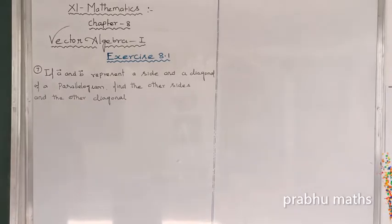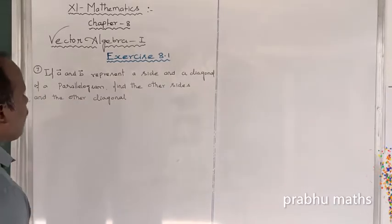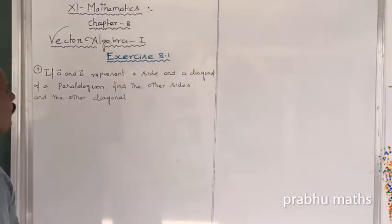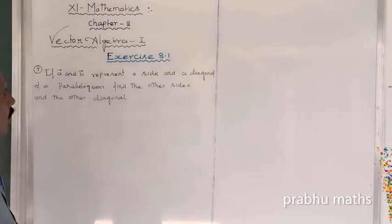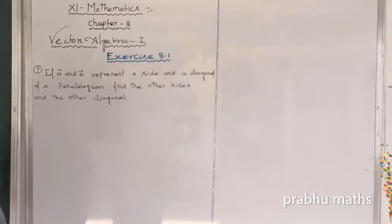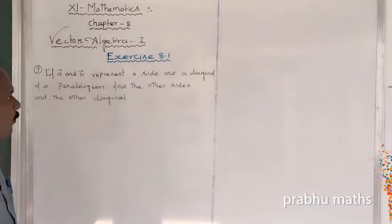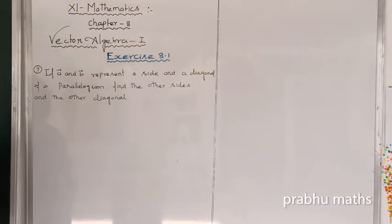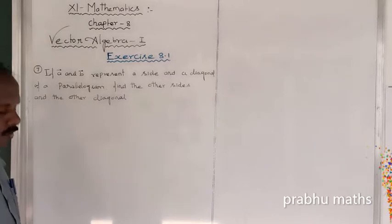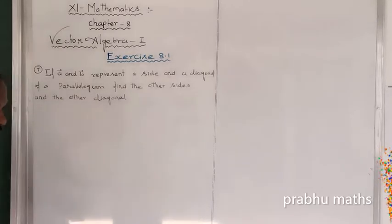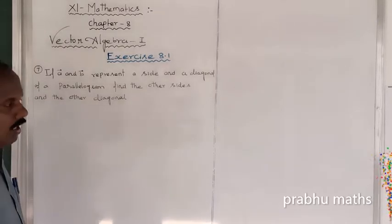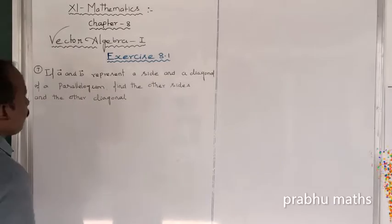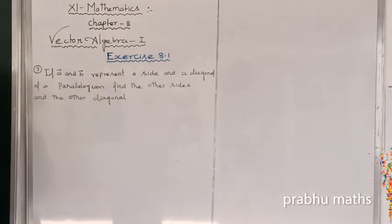X is a problem number 7 or some variant. If vector a and vector b represent the sides and a diagonal of a parallelogram, find the other sides and other diagonal of the parallelogram.